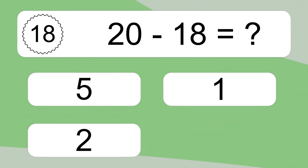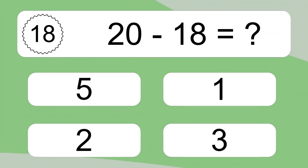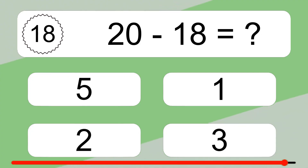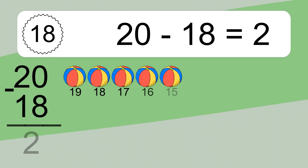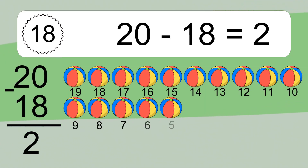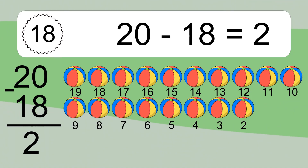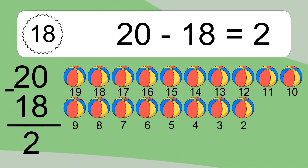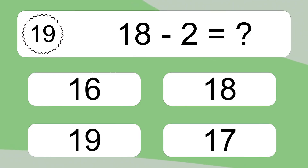20 minus 18 equals what? 20 minus 18 equals 2. Let's count it: 19, 18, 17, 16, 15, 14, 13, 12, 11, 10, 9, 8, 7, 6, 5, 4, 3, 2.